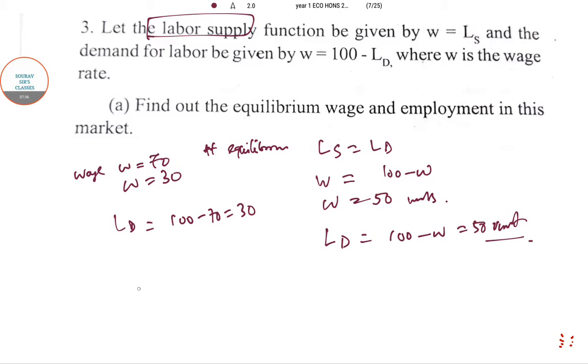When W = 70, labor demand is 100 - 70. Obviously it will fall as wages are high; no market wants to employ more people. So there will be unemployment. How many people will be unemployed with respect to equilibrium? 50 - 30, so 20 units of people.